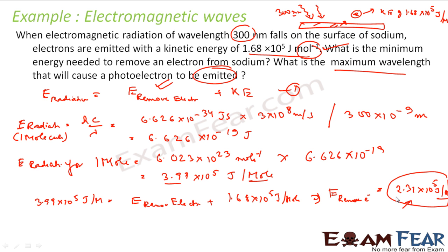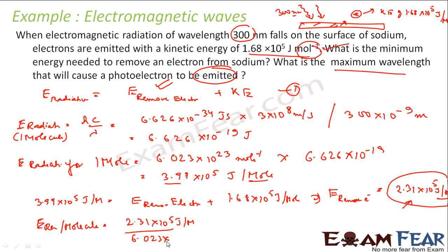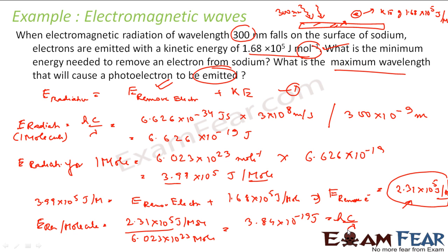This energy is joule per mole, so I can find per molecule very easily. Energy to remove per molecule = 2.31 × 10⁵ J/mol ÷ 6.023 × 10²³ = 3.84 × 10⁻¹⁹ joules. So per molecule, this is the energy required.